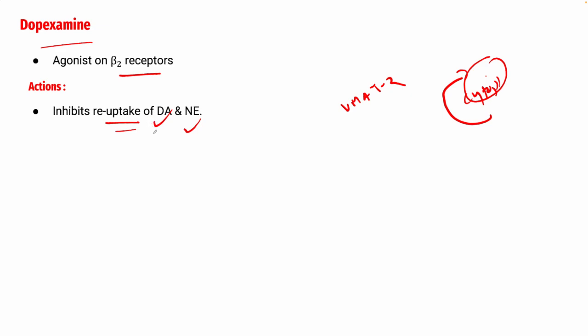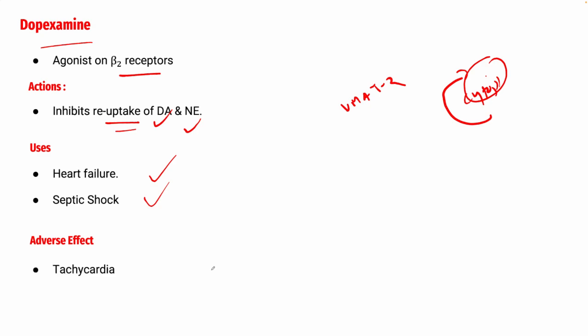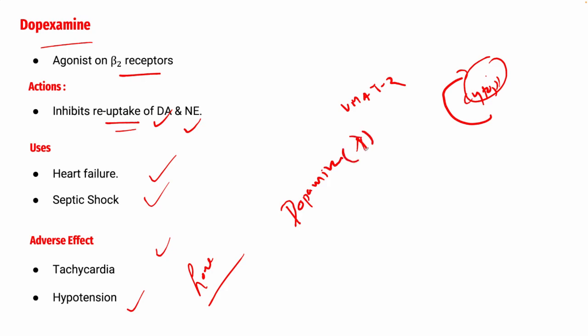The uses of dopexamine include heart failure and septic shock. Various drugs like dopamine can also be used in heart failure, but the choice depends on factors like bioavailability, side effects, and hospital protocols. The adverse effects of dopexamine are tachycardia and hypotension — a decrease in blood pressure — which you can compare with dopamine's adverse effect of increasing blood pressure.